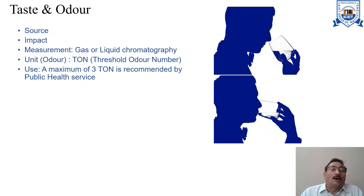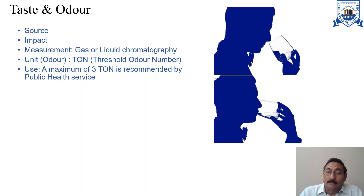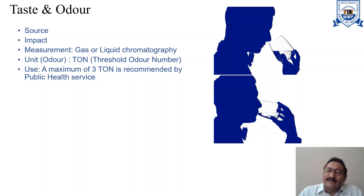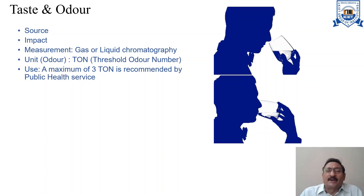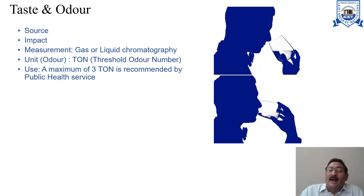Odor and taste are expressed by the Threshold Odor Number, as it represents the dilution ratio at which odor cannot be detected. This parameter is used for potable water. The EPA does not have any standard for this, but a maximum of 3 TON is recommended by the Public Health Service as a guideline. For public water supply, the threshold number should be 1 but should never exceed 3.